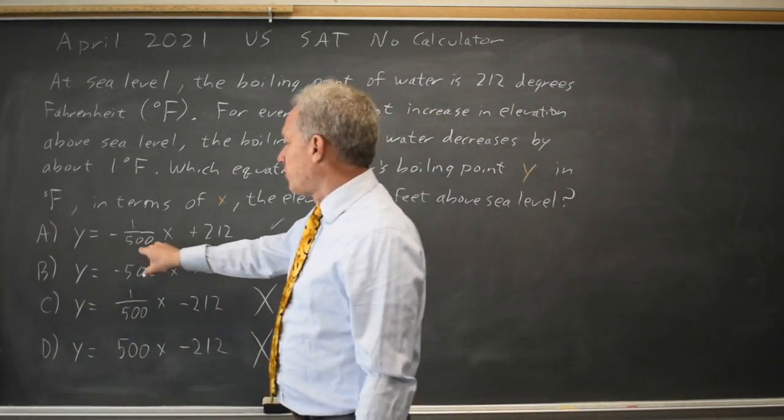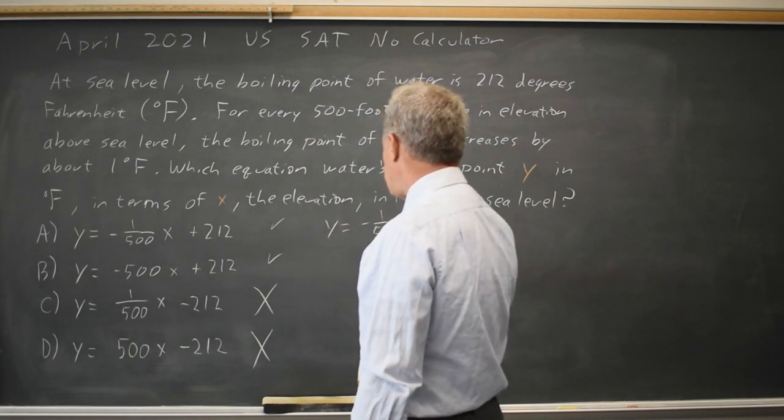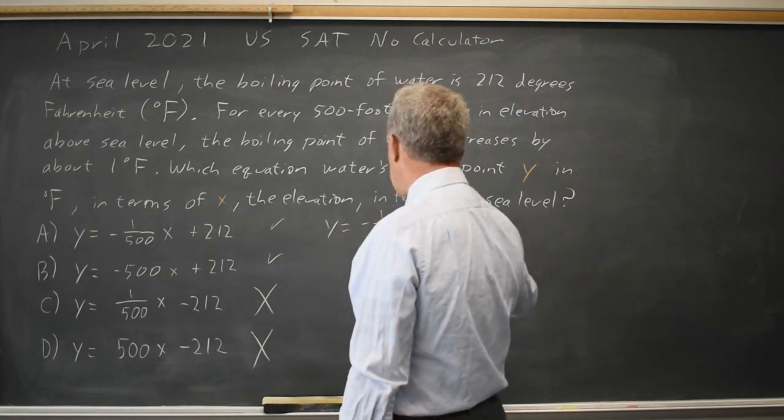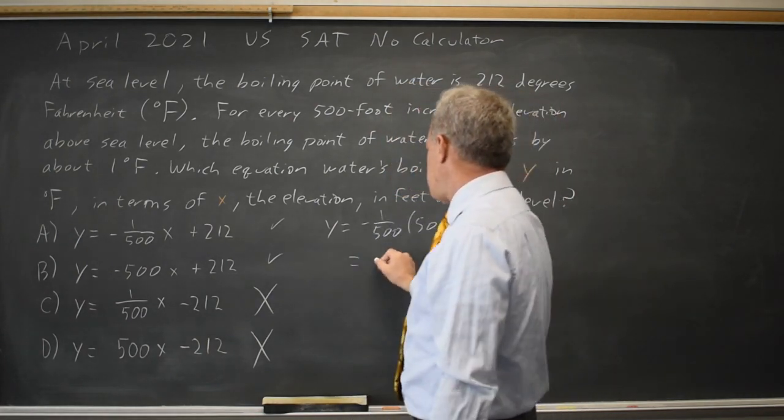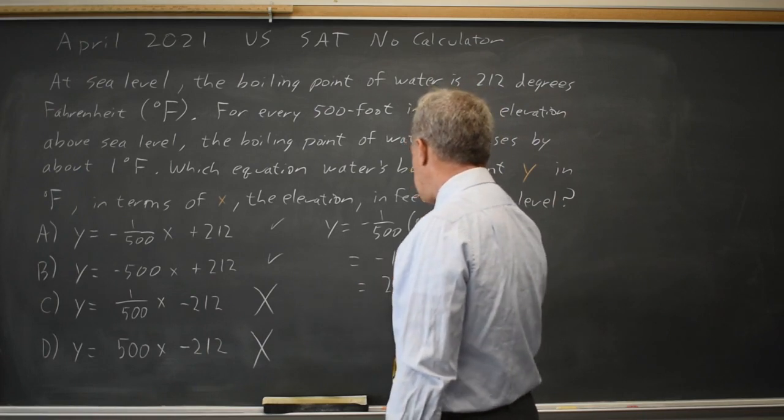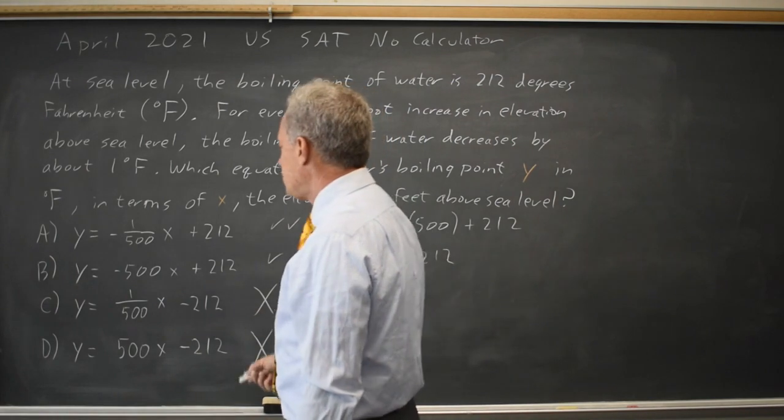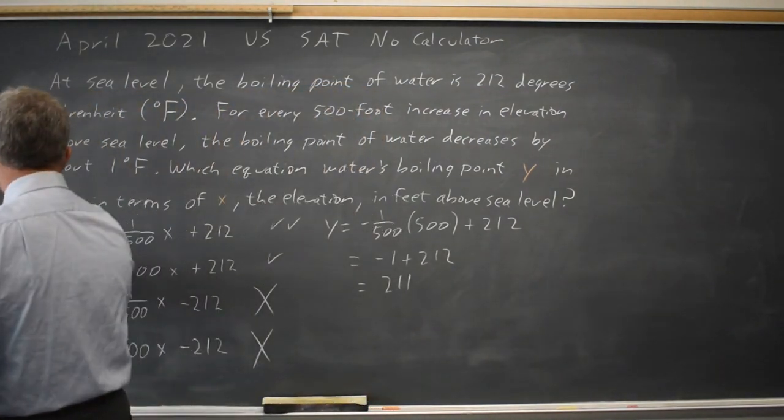Here at X equals 500, Y equals negative 1 over 500 times 500 plus 212, and that's negative 1 plus 212 is 211. We did decrease by 1 degree, so choice A matches in that respect.